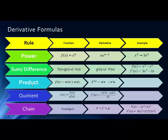For the Product Rule, when we have a function that is a product of two other functions, the derivative equals the derivative of the first function times the second function, plus the derivative of the second factor times the first function.